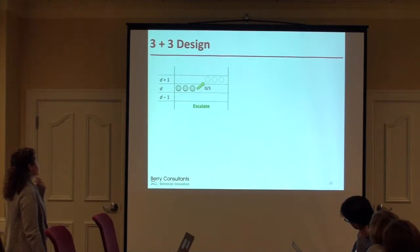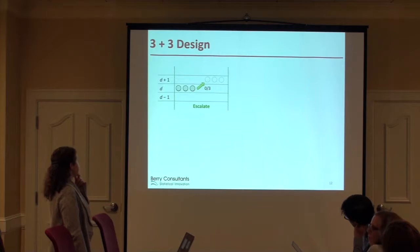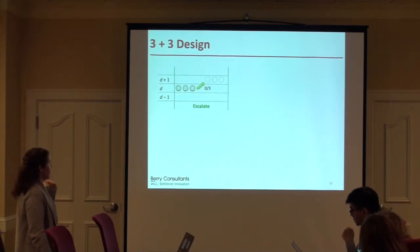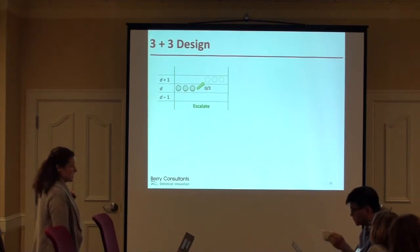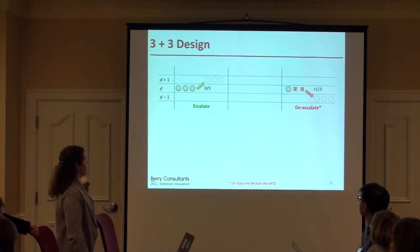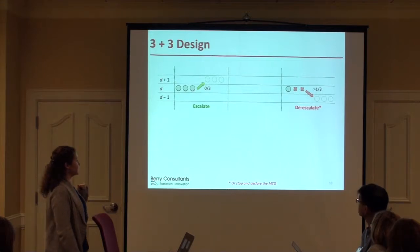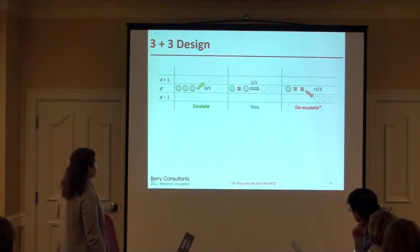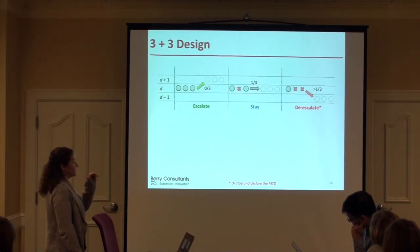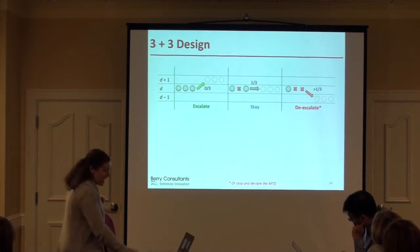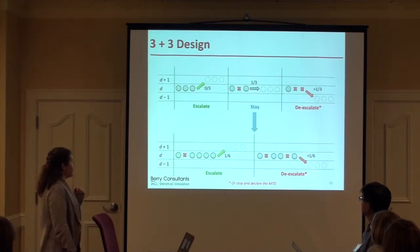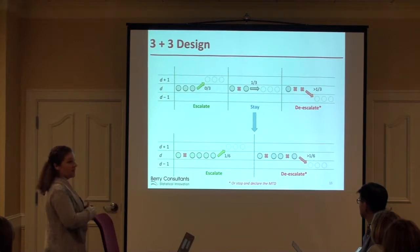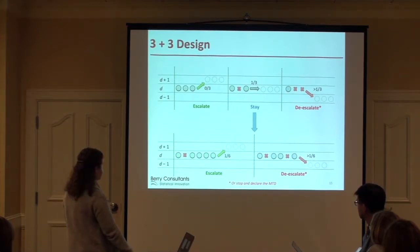The three-plus-three design: you enroll three subjects on a dose. If none of those three have a dose-limiting toxicity, the next cohort escalates to the next highest dose. If more than one of the three have a DLT, the next cohort is enrolled at the next lower dose — you de-escalate. If you have exactly one out of three with a DLT, you enroll the next cohort at the same dose. After those next three subjects, if you've now got a DLT you expand to six subjects. If you don't see any further DLTs and still just have one out of six, you go up for the next cohort. If you do see additional DLTs, then you de-escalate.